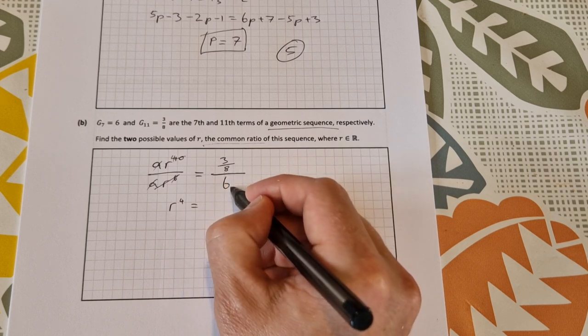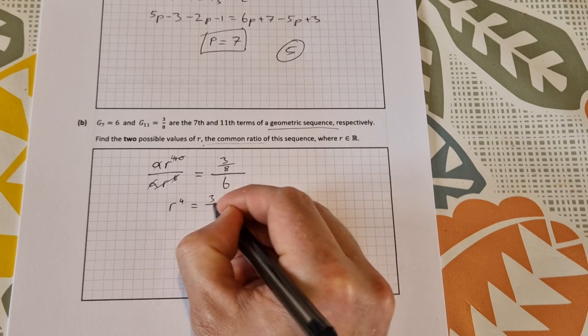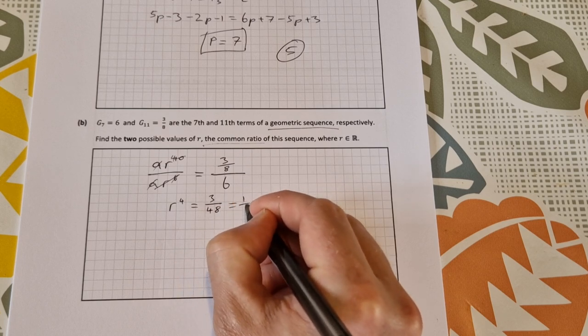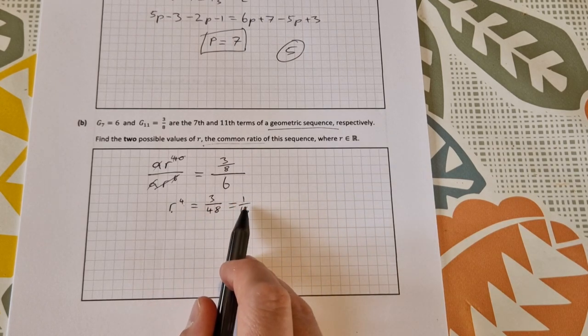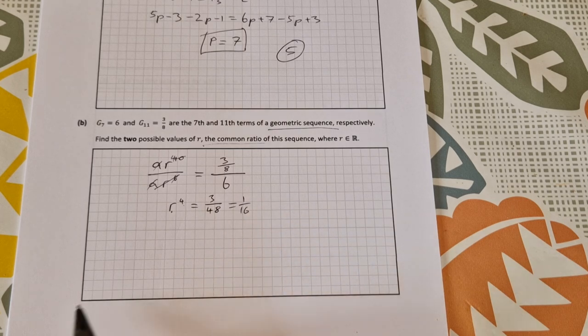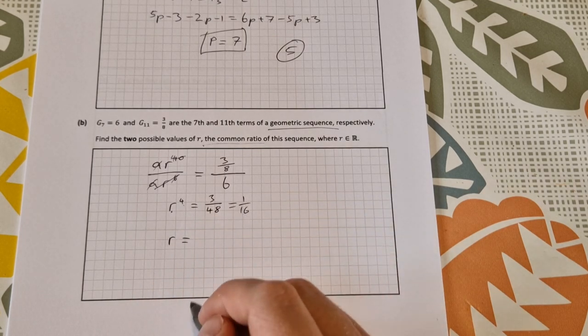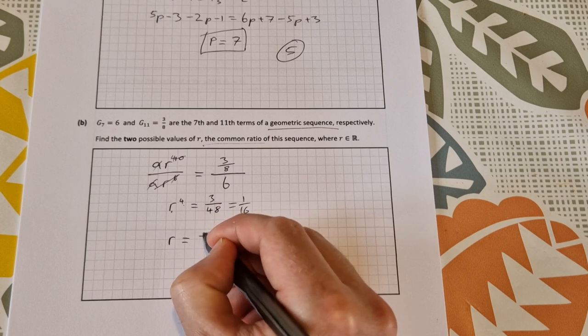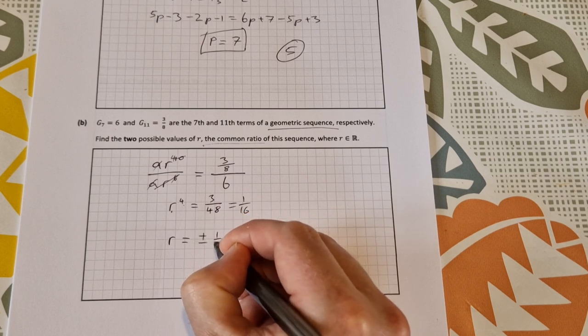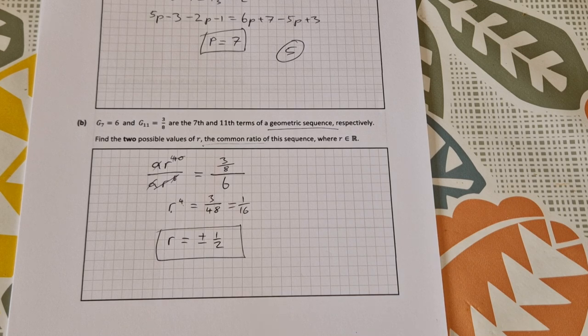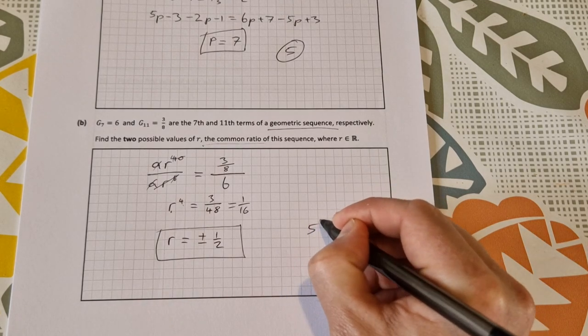So I have r to the power of 4 is equal to 1 over 16. Take the fourth root of both sides to get r is equal to the fourth root of 1 over 16, which is plus or minus a half. So the two values are plus a half or minus a half, and that again is worth five marks.